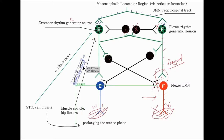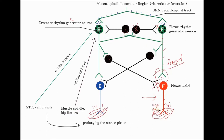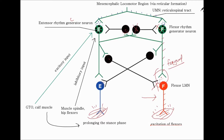This is an inhibitory input via an inhibitory interneuron in this circuit. If you inhibit the extensor muscle, the end result will be to excite the flexors. So the end result of exciting the muscle spindle is excitation of the flexors.